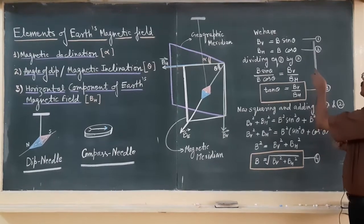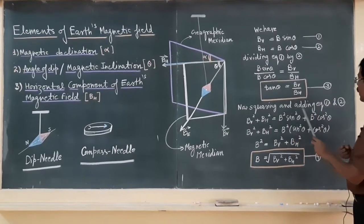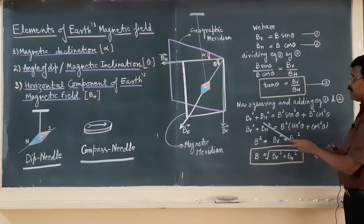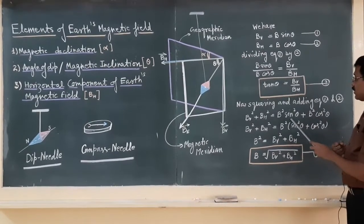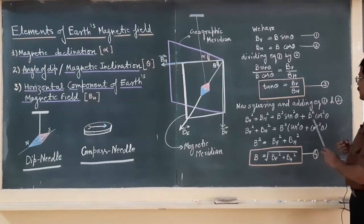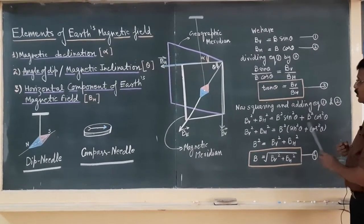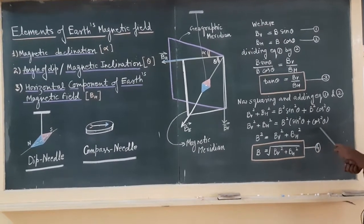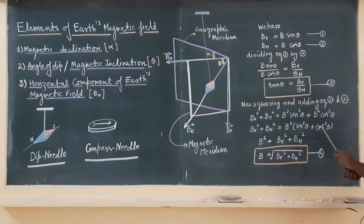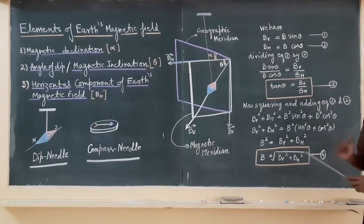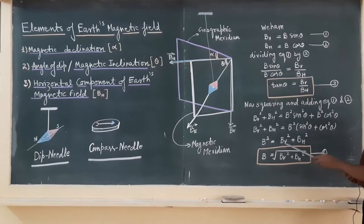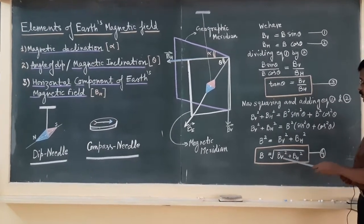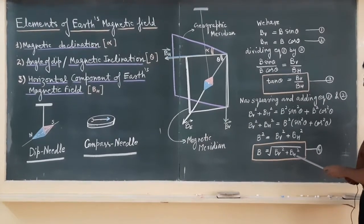Now if you come to the squaring and adding of equation 1 and 2, if you square and add, then we have BV² + BH² is equal to B² sin² θ + B² cos² θ. So in the right side, B² is common, then sin² θ + cos² θ, and sin² θ + cos² θ is equal to 1. So finally, we have B² = BV² + BH², and B = √(BV² + BH²).